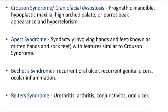Behcet syndrome: characterized by recurrent oral ulcers, recurrent genital ulcers, and ocular inflammation. So if you get a patient with a recurrent oral ulcer, it may be a case of Behcet syndrome, and you have to take the history to determine if there is any genital ulcer or ocular inflammation.